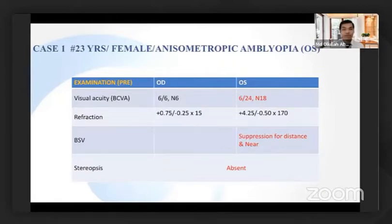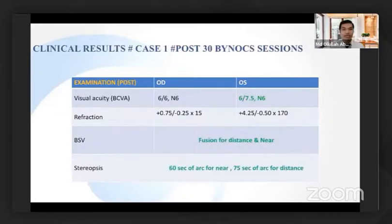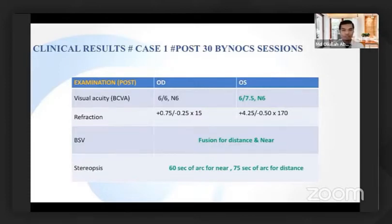Let us see which are the ideal candidates to enroll for the Binox program. It is very common that patients are detected at a later age when patching is not an option. An isometric amblyopia case with separation for distance and near can be treated with the Binox program efficiently, resulting in improved monocular acuity as well as stereopsis for near and distance. In one such patient, after dichoptic therapy, the patient gained stereopsis for near to 60 seconds of arc and 75 seconds of arc for distance.